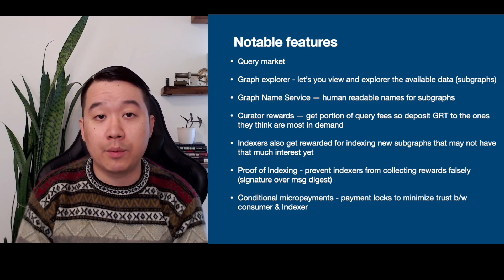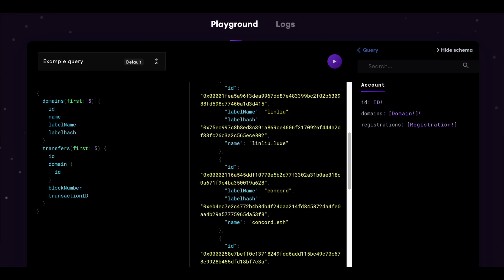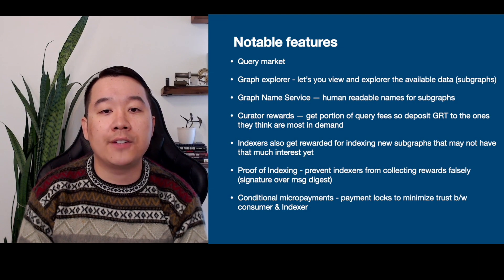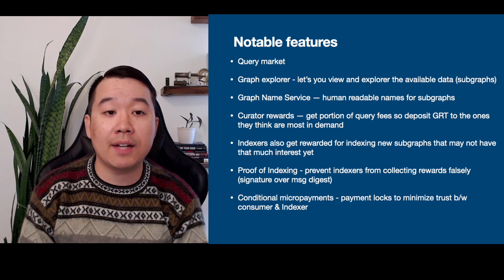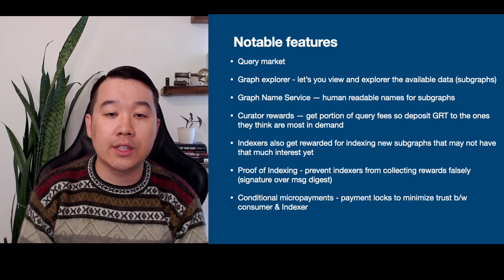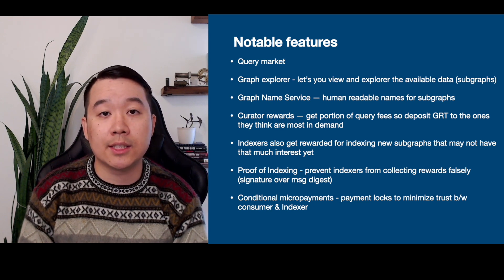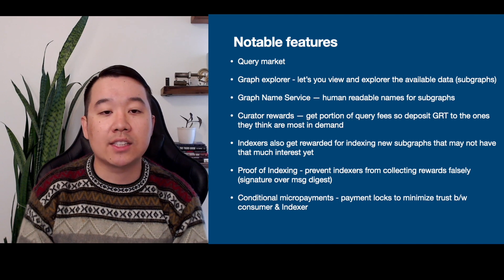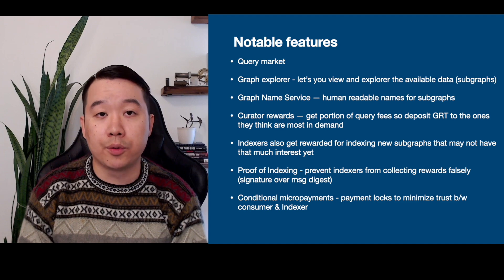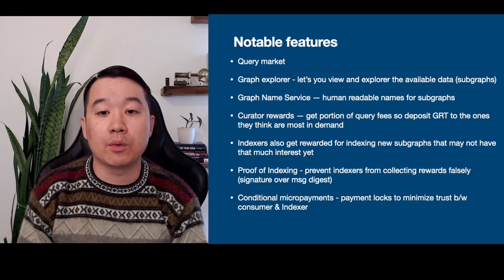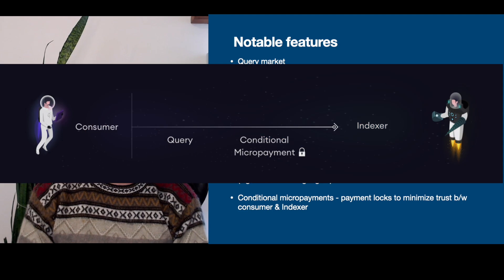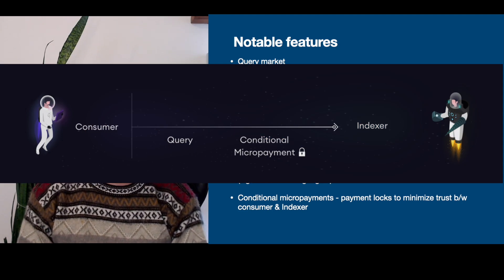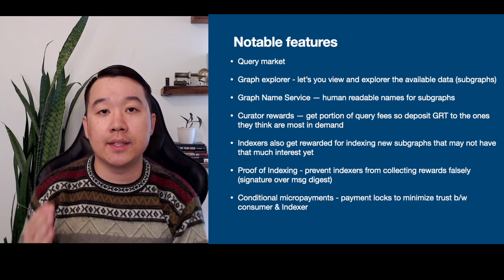Some notable features of the Graph Protocol: the Query Market, already covered. The Graph Explorer, which you can try on their website — it lets you view and explore available data. There's also the Graph Name Service, providing human-readable names for subgraphs. Curator Rewards let you earn a portion of query fees by depositing GRT into subgraphs you think will be most in demand. Indexers get rewarded for indexing new subgraphs. There's also proof of indexing, which prevents indexers from collecting rewards falsely, and conditional micropayments, which act as payment locks to minimize trust between consumers and indexers.